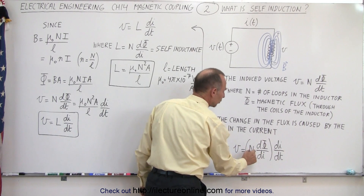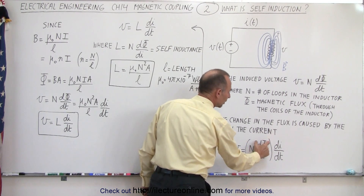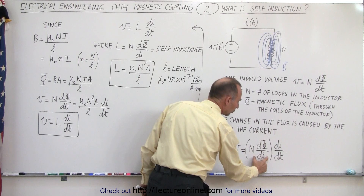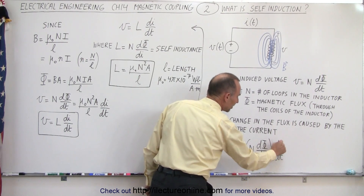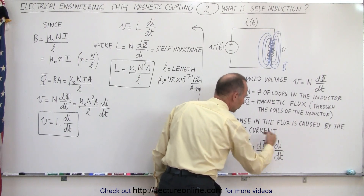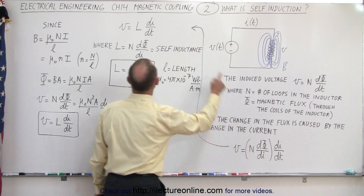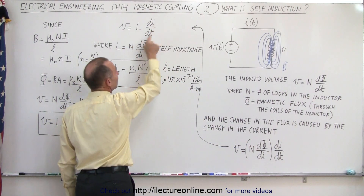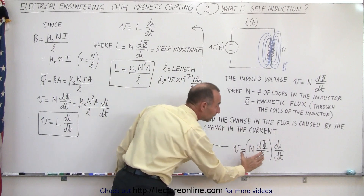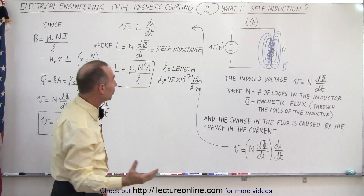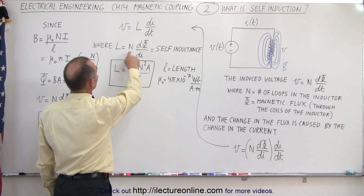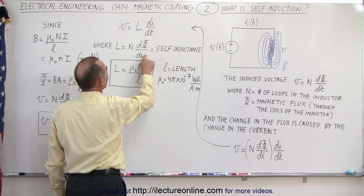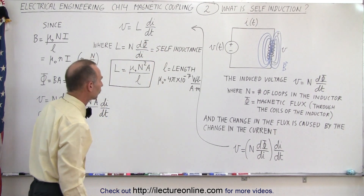We see that the number of loops times the change in flux with respect to current — that portion times di/dt, which is the change in the current with respect to time — can be written as L times di/dt. This means that L, the self-inductance, can be written as N times the change in flux with respect to the change in current.